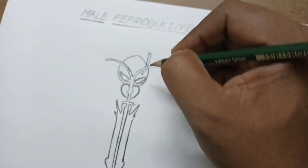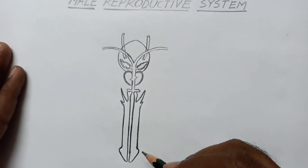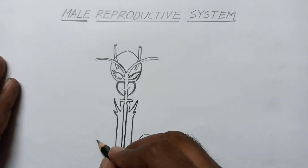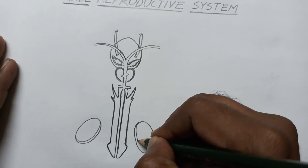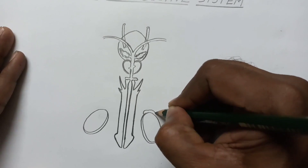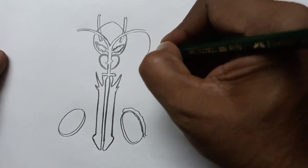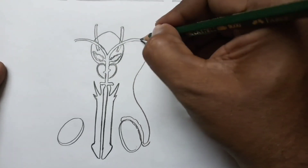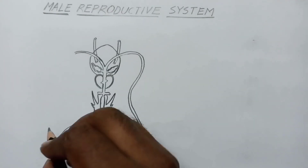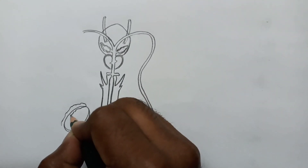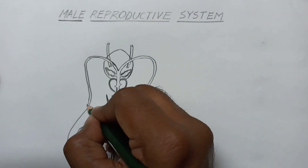These are the two testes, which are present in the male reproductive system. These are very important organs. Now I am drawing the epididymis. You connect this, and connect the seminal vesicles like this. Now connect the seminal ducts like this — this is also the epididymis. Again connect the seminal ducts.